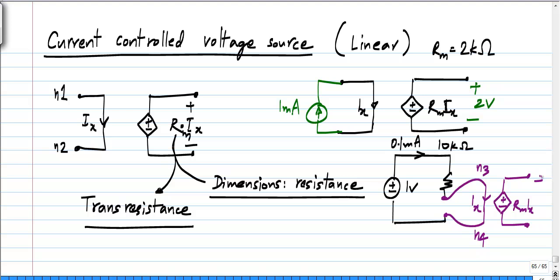What does this mean? Across this I will measure 2 kilo ohms times 0.1 milliamps, which is 0.2 volts.